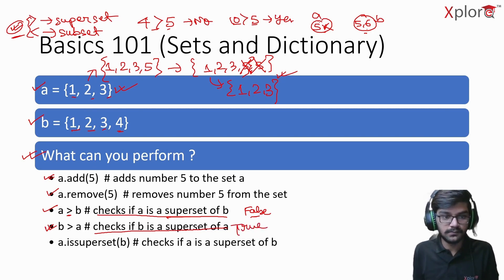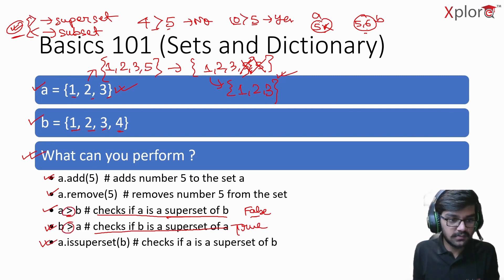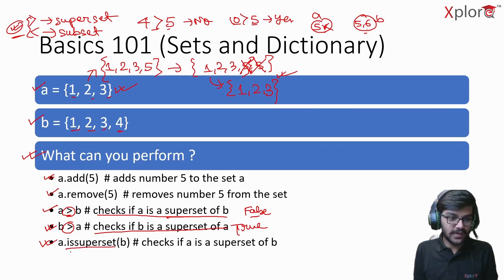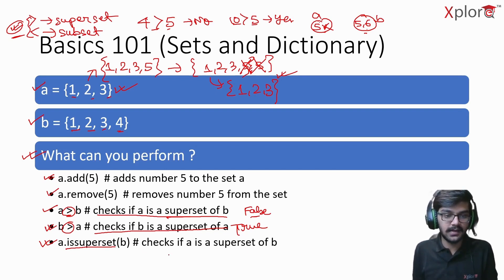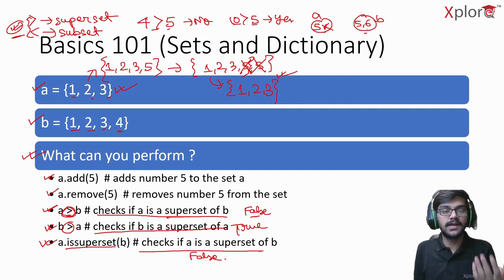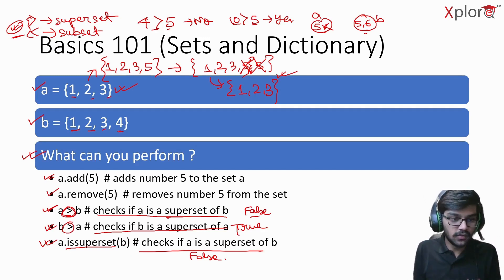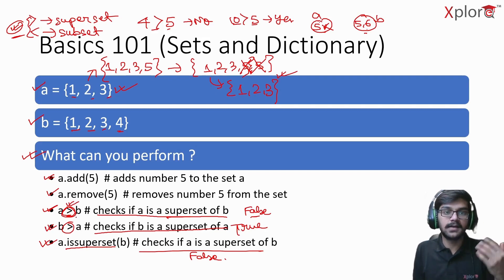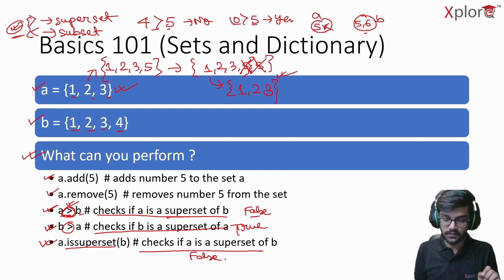There are two ways to check for a superset: using the greater-than symbol, or using the dot issuperset() method. So 'a.issuperset(b)' checks if a is a superset of b, which in this case returns False. This is a useful concept to know, especially for MCQs in examinations where the operator is used with a set variable rather than a number.